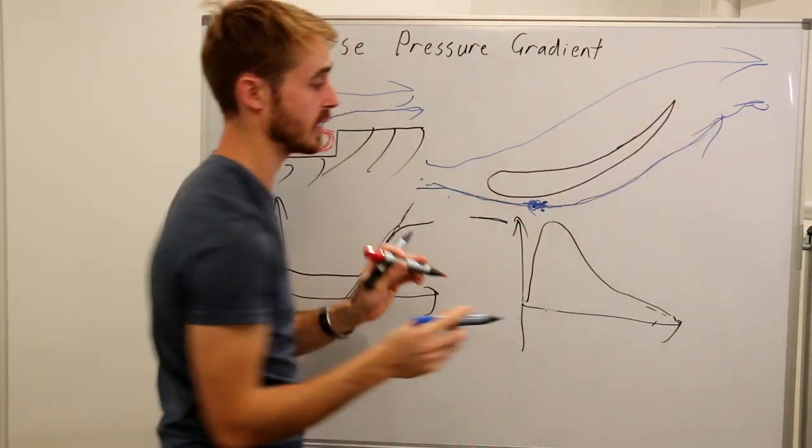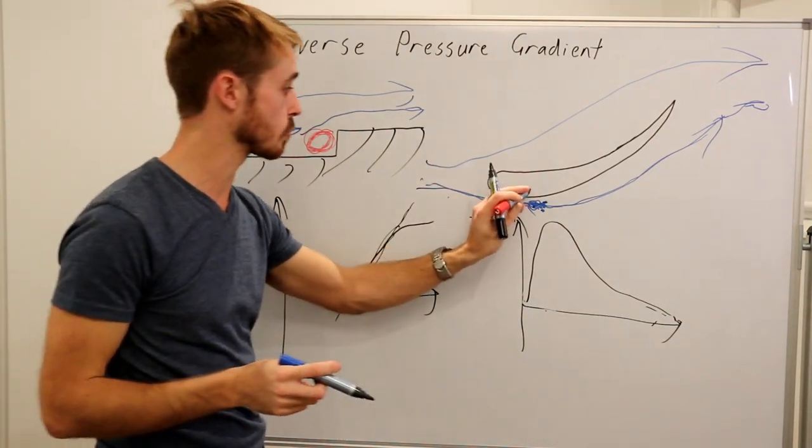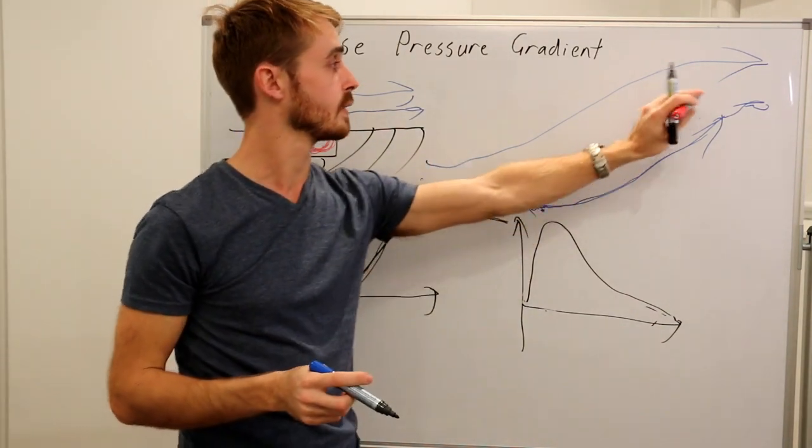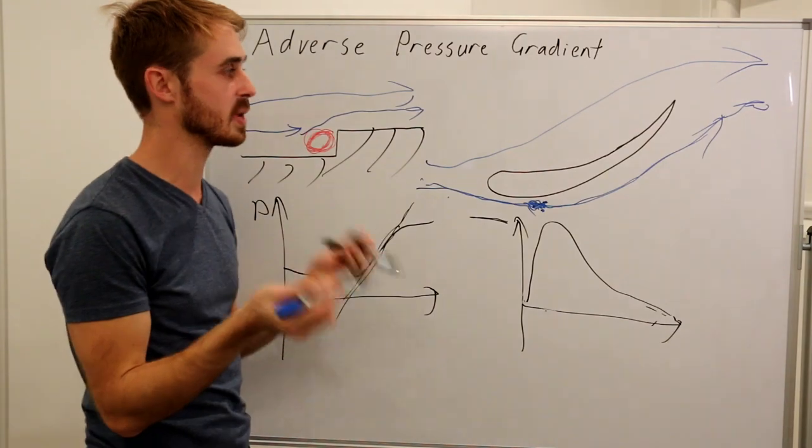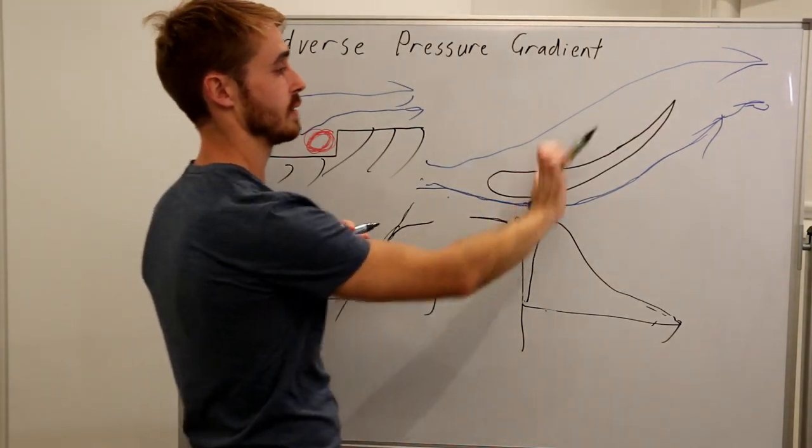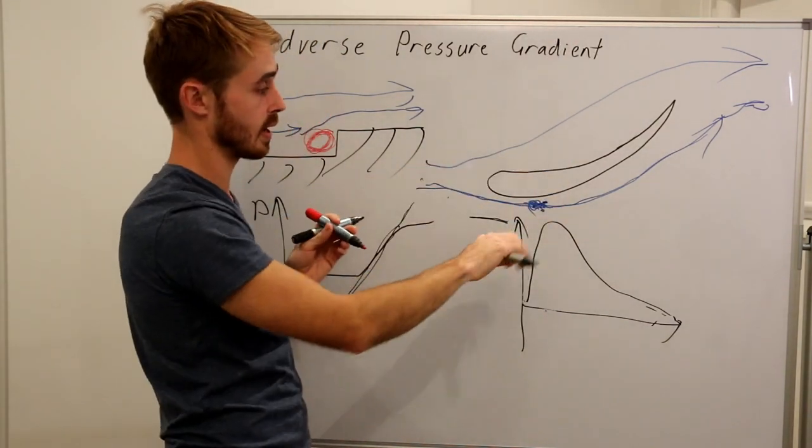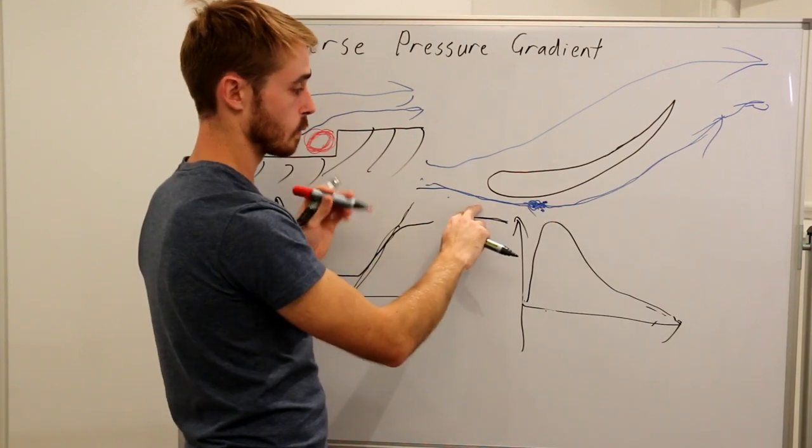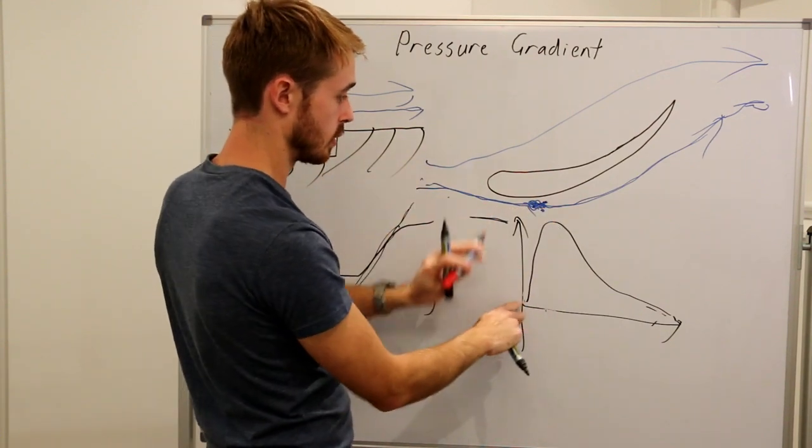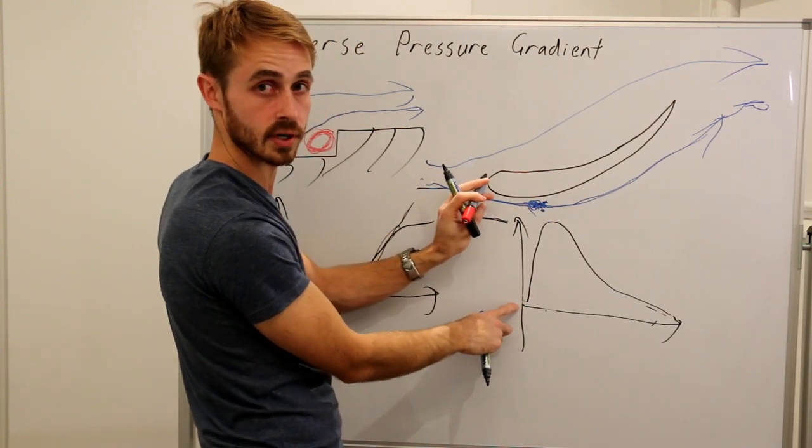So basically flow is fast here, slow here, slow here. So we can see here that the pressure has got to be low here, high here, high here. Now this is the fundamentals of how a wing works and is what gives us our downforce on our cars.